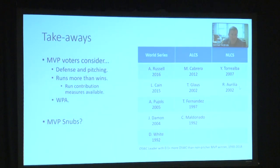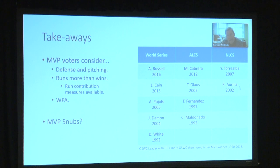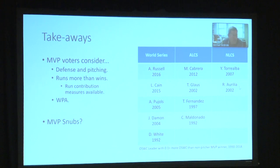What do we take away from this application? MVP voters consider defense and pitching as they should — my measures can't comment on that. MVP voters consider runs more than wins, probably because run contribution measures are more readily available. They also consider Win Probability Added, which makes sense — they care about the emotion of the game. But my measures say these are not capturing a full and fair allocation of credit in playoff series. If we look for players who had more than 0.1 win credit more than the player who received the MVP, those would be good candidates for the award — potential MVP snubs. Johnny Damon is listed as one of those.